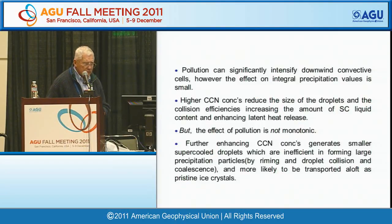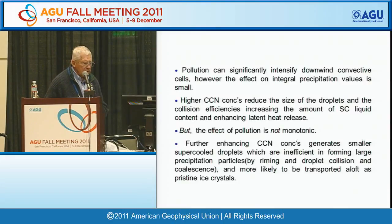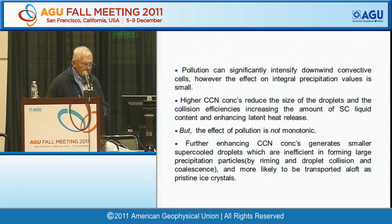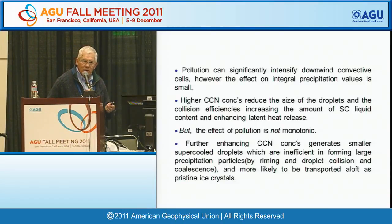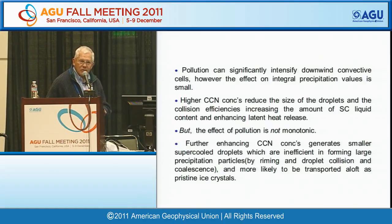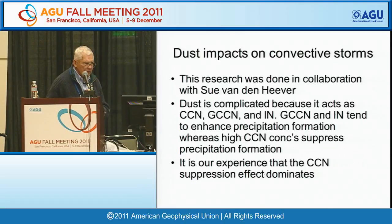Pollution in certain conditions can significantly intensify downwind convective cells, but the effect on integral precipitation values is relatively small. Higher CCN concentrations reduce the size of droplets, reduce the collision efficiency, increase the amount of super-cooled liquid water, and enhance latent heat release. But the effect is not monotonic — if you get too much pollution, the simulation suggests suppression of the warm cloud collision and coalescence process, and the ice particle riming process to such an extent that you get a lot more water transported to anvil levels and you actually get a tip-over effect, reversing from enhanced precipitation with increasing CCN to, in some cases, a reduction in precipitation.